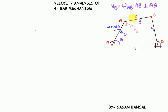Similarly, velocity of point C with respect to B — since we don't know the angular velocity of BC, we know only the distance BC — the velocity of point C with respect to B will be perpendicular to link BC.